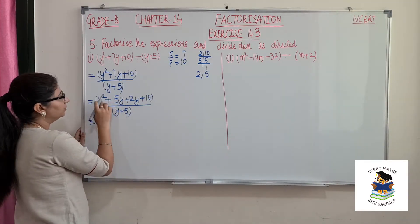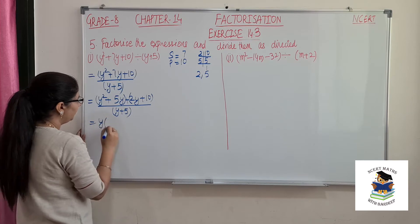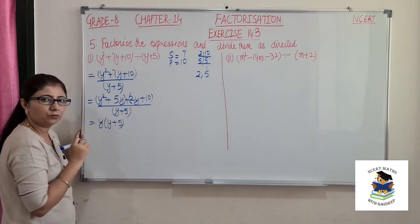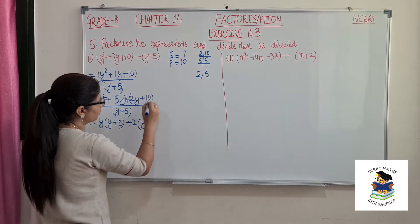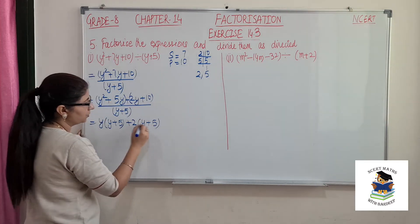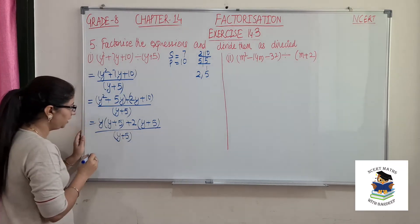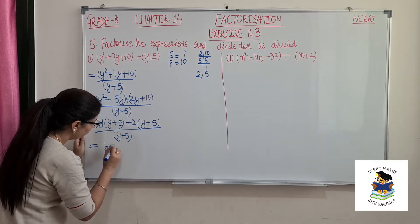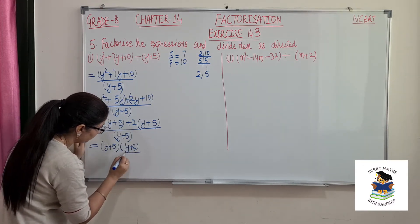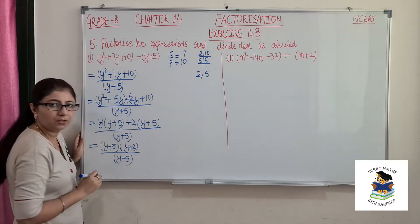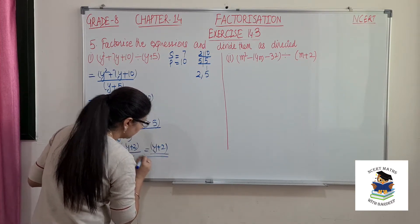We regroup the first two terms and last two terms. From the first two terms, y is common giving y(y plus 5). From the last two, 2 is common giving 2(y plus 5). So (y plus 5) is the common factor, giving (y plus 5)(y plus 2) over (y plus 5). Cancelling, our answer is y plus 2.